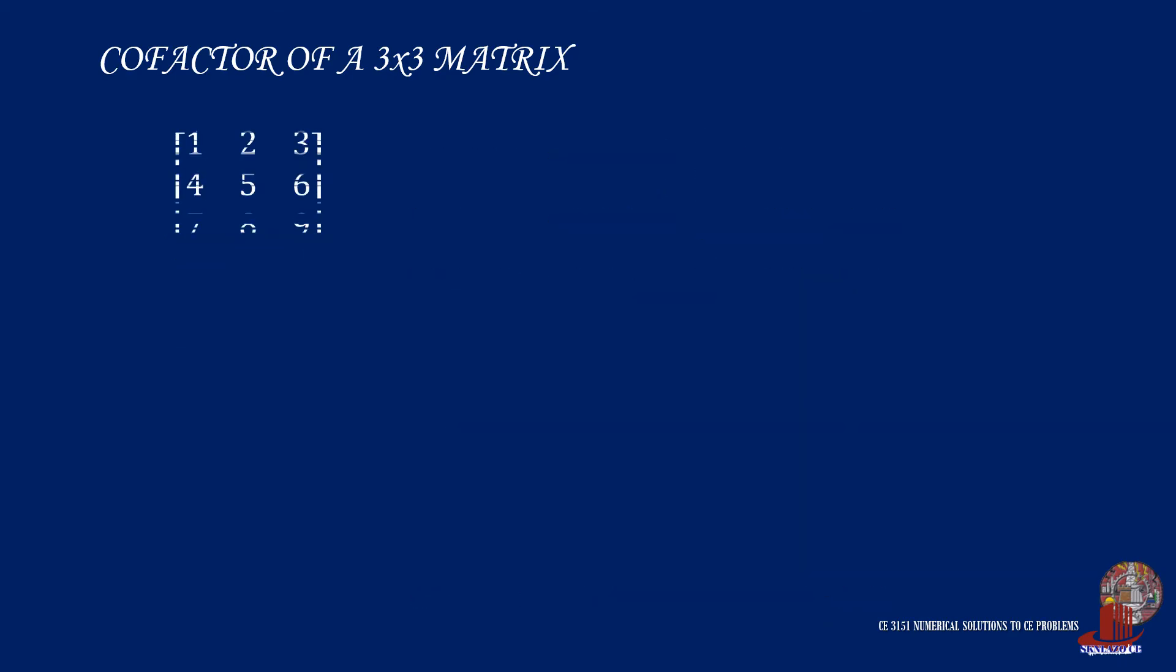Have a 3 by 3 matrix for an example. In this case, we are going to start with the interchanging sign of the entries to shorten the computation employed. In case of solving for the cofactor of 1, the remaining determinant has 5, 6, 8, and 9. Compute it as 5 times 9 less 8 by 6 and that is negative 3.